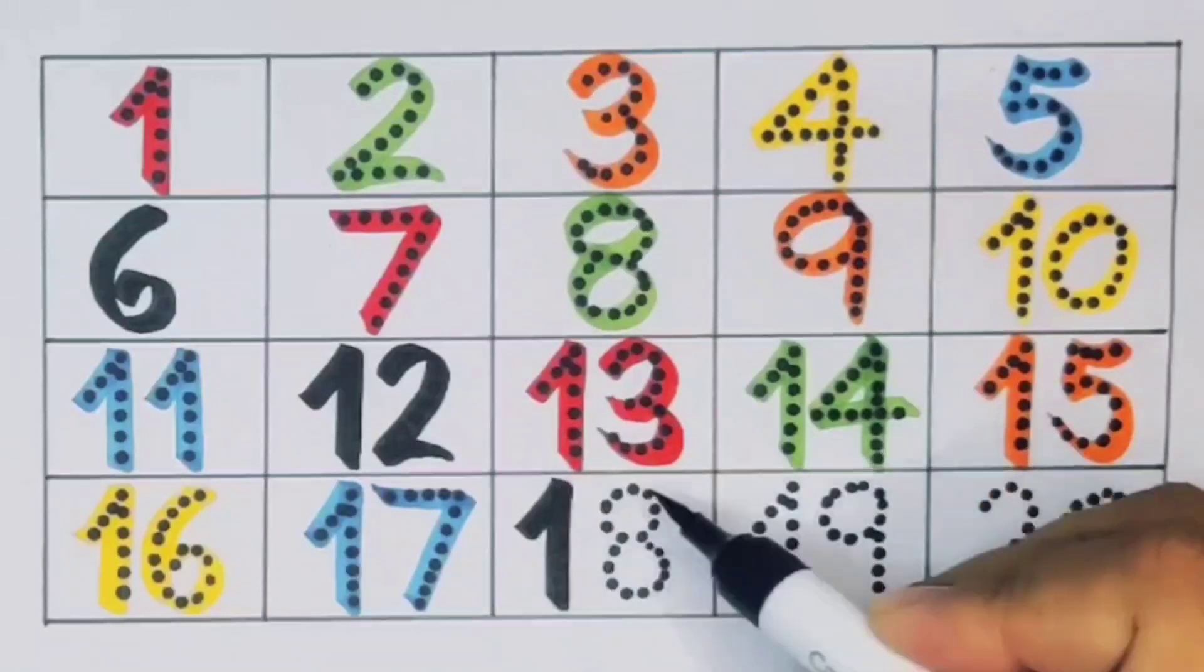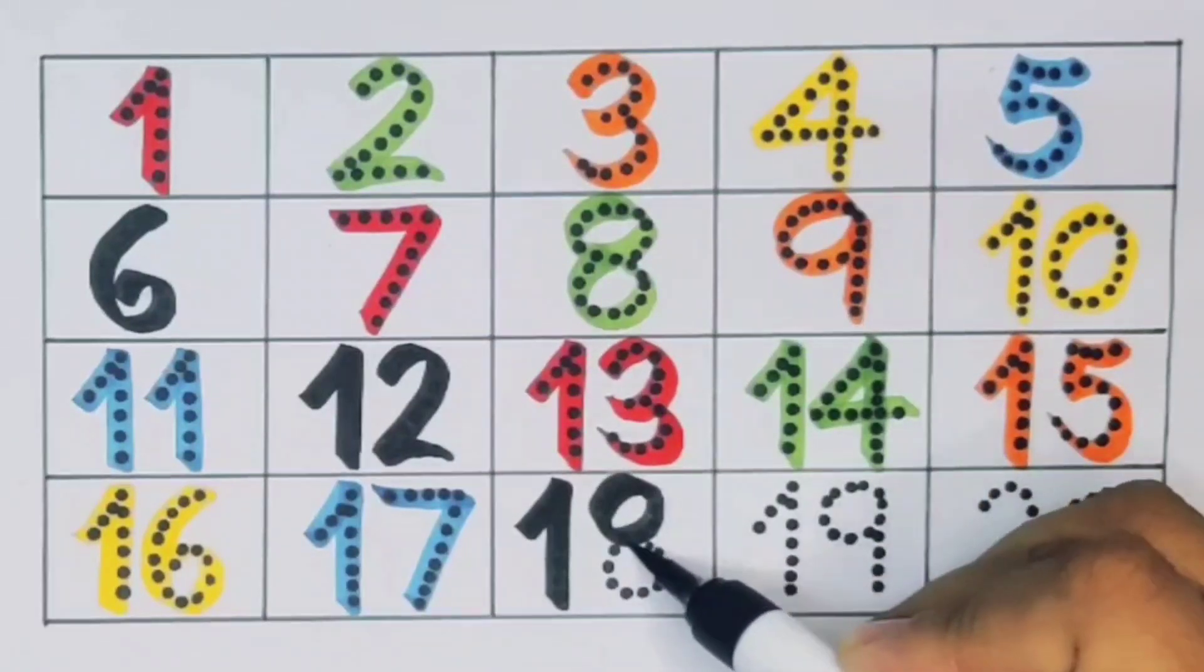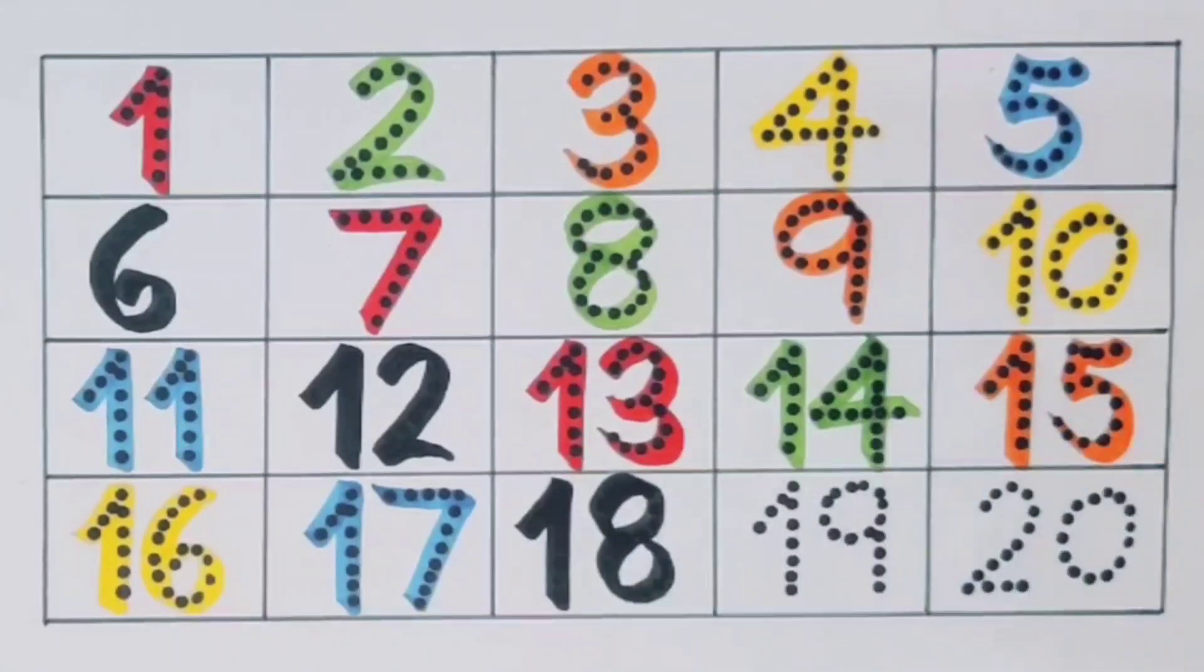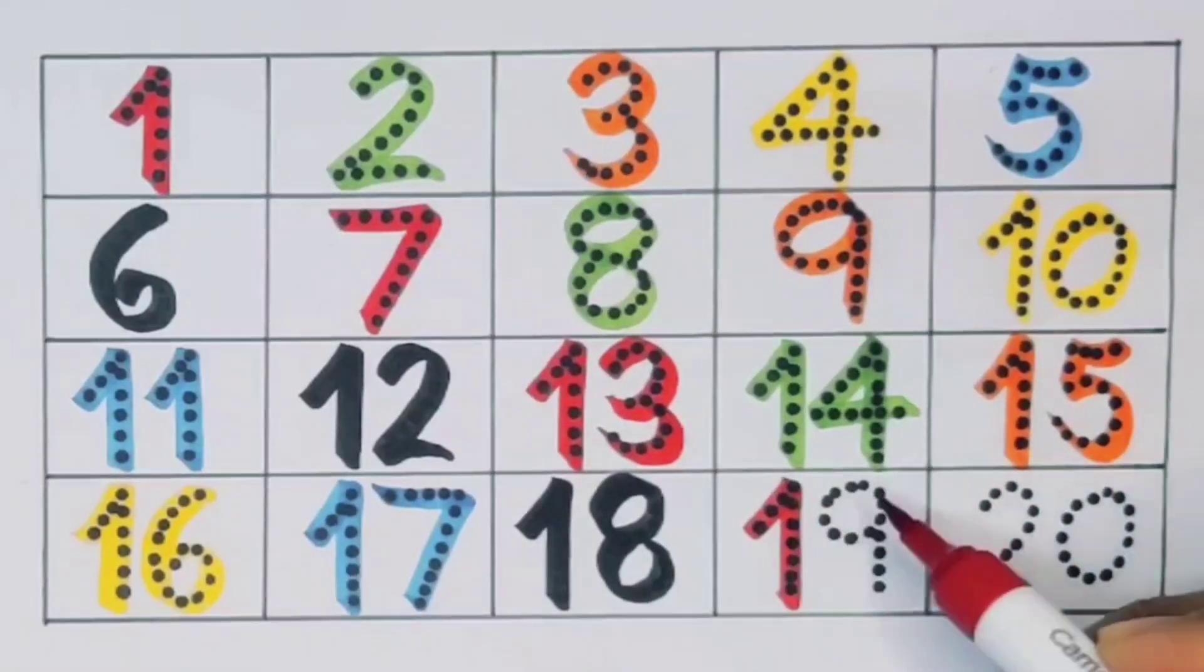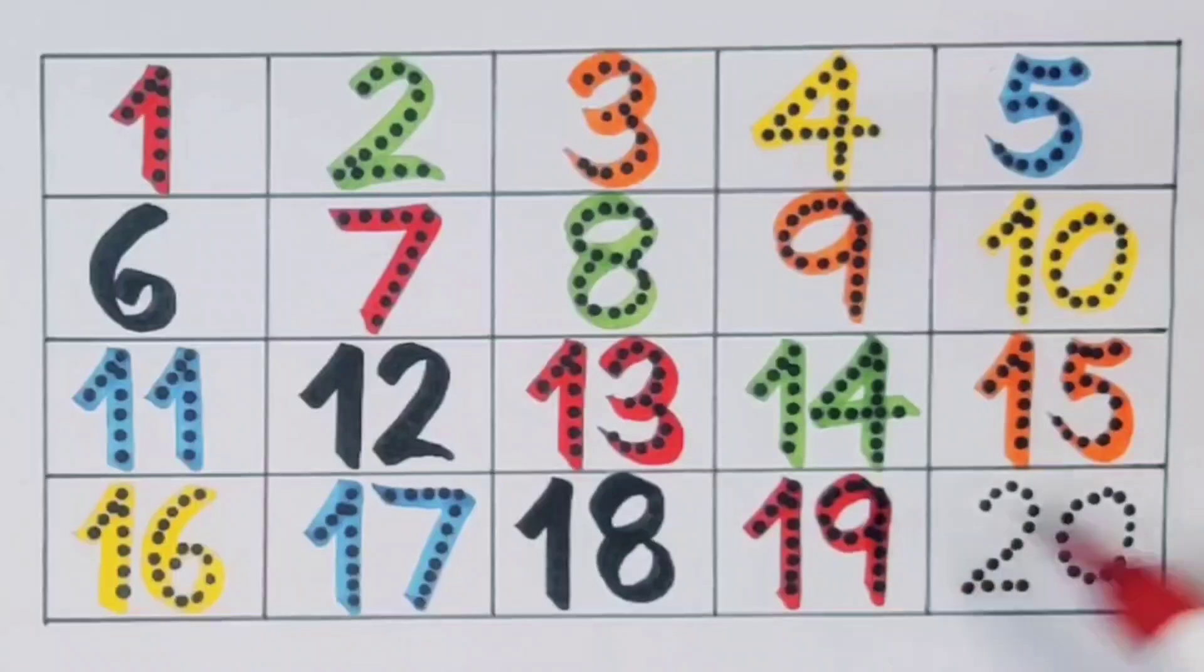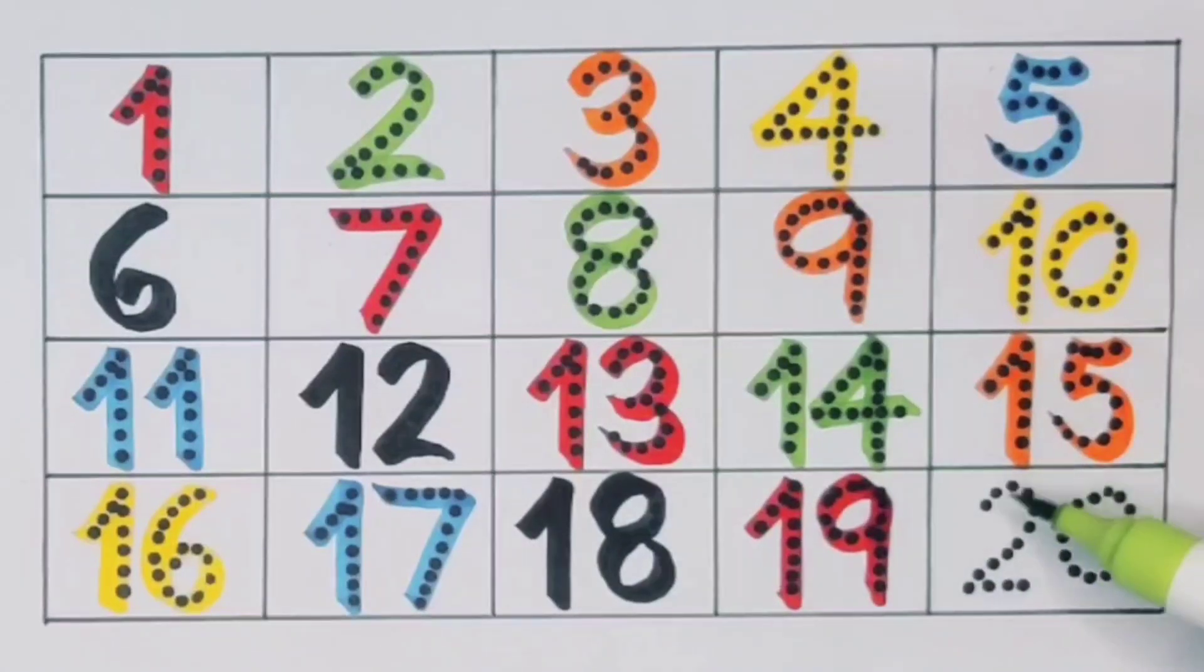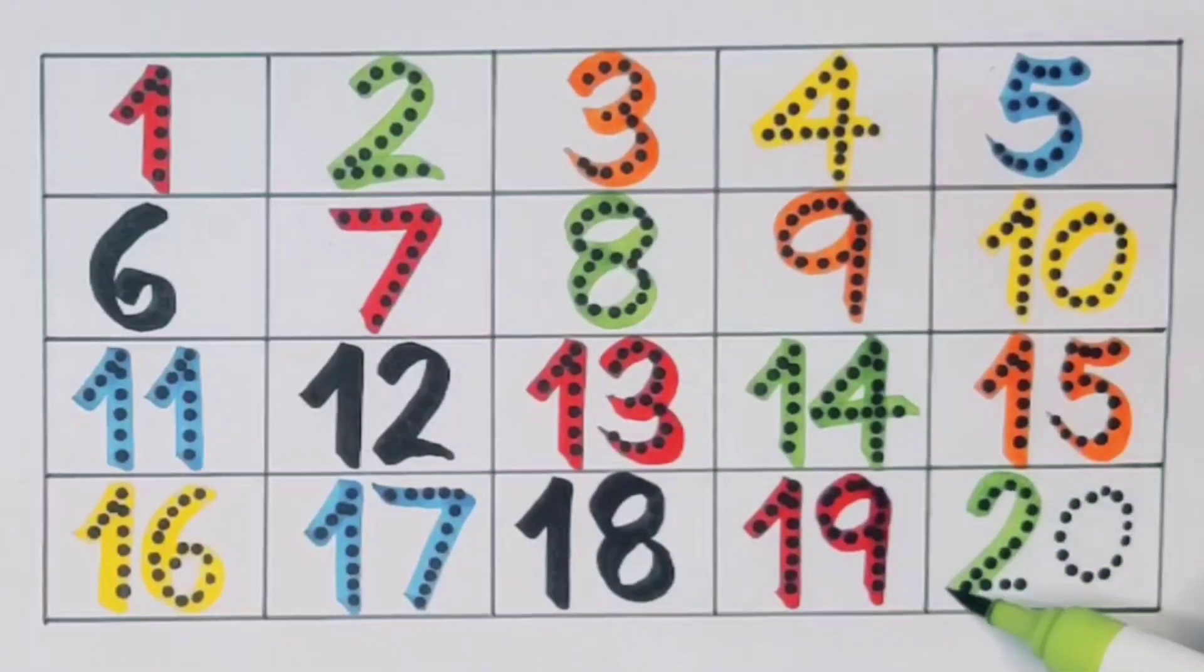Next kids, seventeen, one seven, seventeen, number seventeen. Next kids, eighteen, one eight, eighteen, number eighteen.